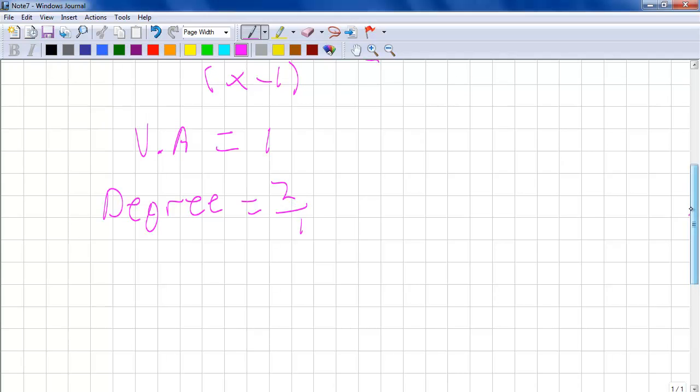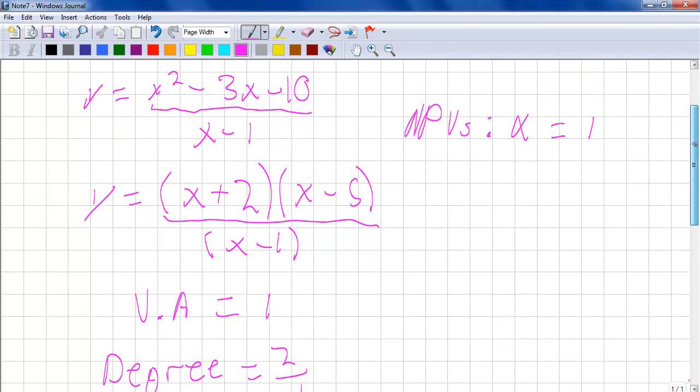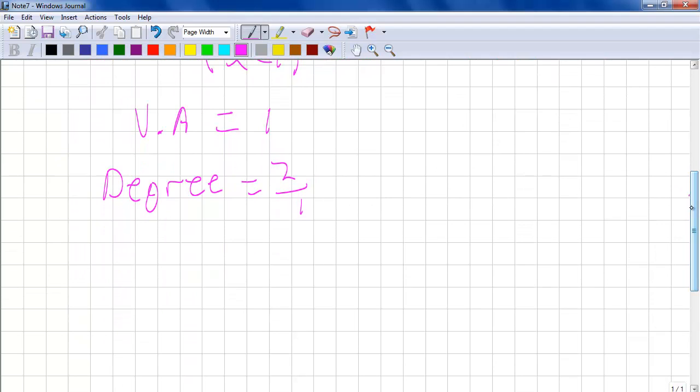In order to find the slant asymptote, we simply divide the leading coefficient of the top function by the leading coefficient of the bottom function. And in this case, the slant asymptote is equal to 1 divided by 1. Therefore, the slant asymptote is equal to 1x.